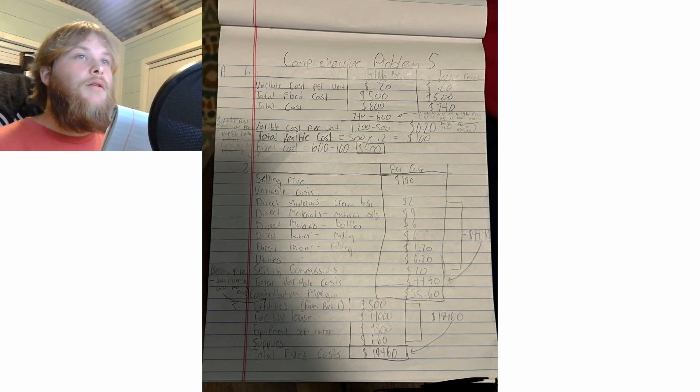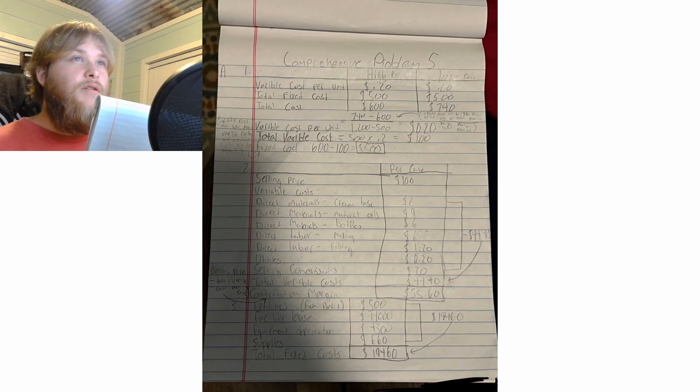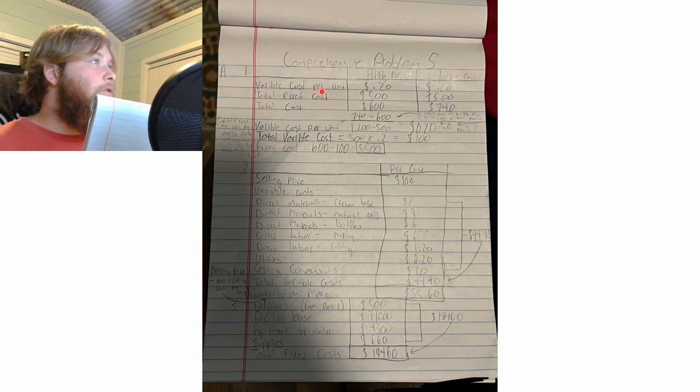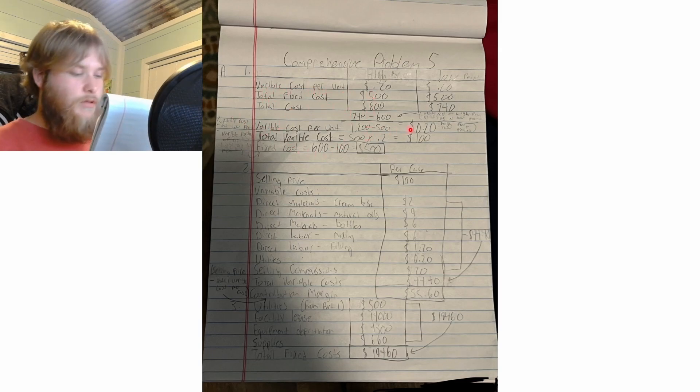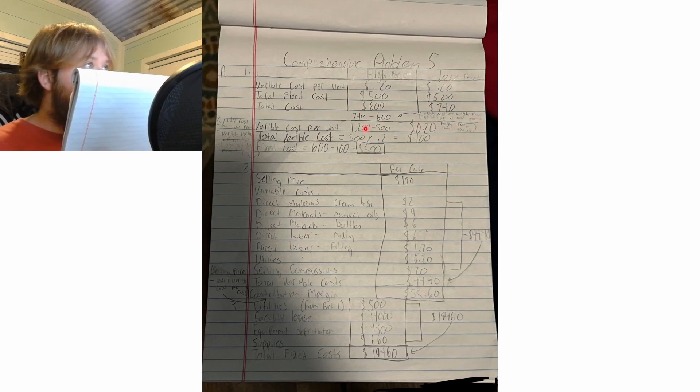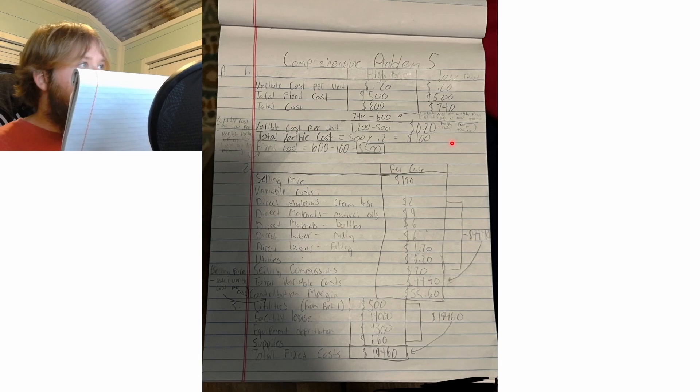Problem number one says determine the fixed and variable portions of the utility cost using the high-low method. I got the variable cost per unit by taking the utility cost at the high point minus the utility cost at the low point — 740 minus 600 — over the high point minus the low point — 1,200 minus 500 — which equals 0.20, or 20 cents.